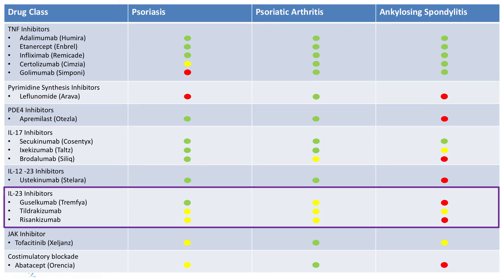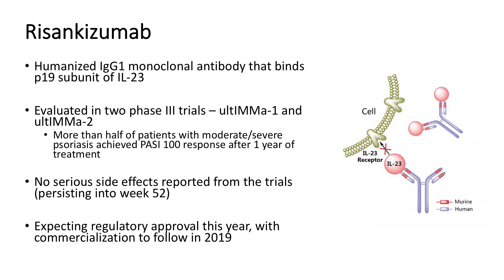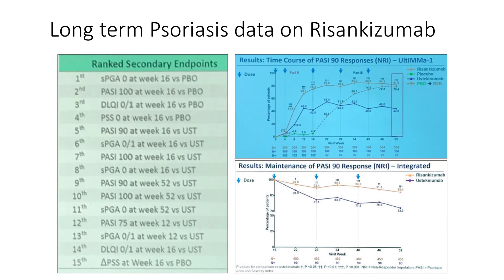The newer IL-23 inhibitors: guselkumab is approved for psoriasis, and psoriatic arthritis trials are ongoing. Tildrakizumab in abstract form is also showing some improvement for PsA. The newest IL-23 inhibitor, still in phase two studies, is risankizumab — showing some persistence out to 52 weeks with no serious side effects thus far, with phase three results expected around 2019.